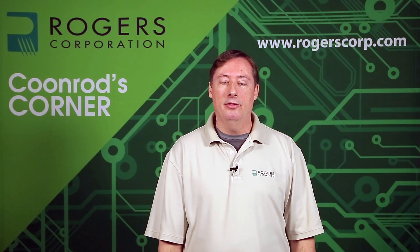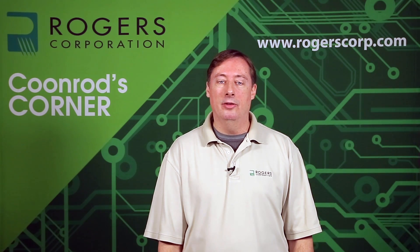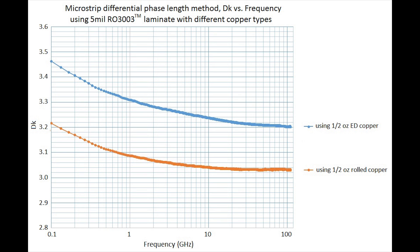Now let's look at a very wideband response of material of the same thickness but with different copper, to examine the effects of copper surface roughness. The curves shown use the RO3003 laminate at 5 mil thickness, which is very thin. The difference is circuits made on the same laminate but with different copper types: the orange curve is from circuits using rolled copper, and the blue curve from circuits using ED copper. The ED copper has a surface roughness of about 1.8 microns RMS, which is considered relatively rough. The rolled copper has a surface roughness of about 0.3 microns RMS, which is considered very smooth. You can see that the higher dielectric constant curve corresponds to the circuit with the rougher ED copper.